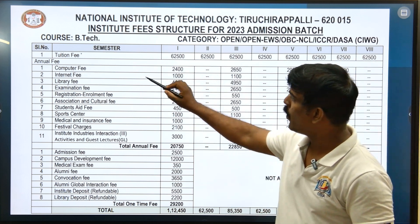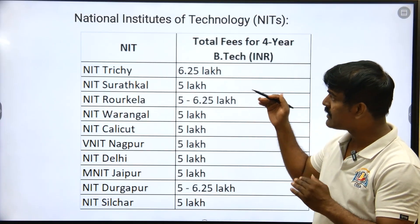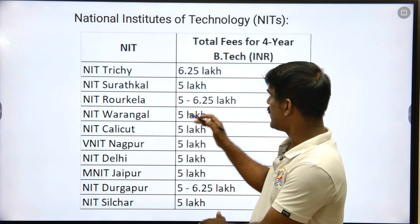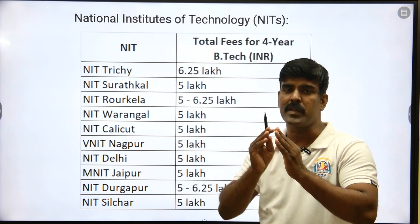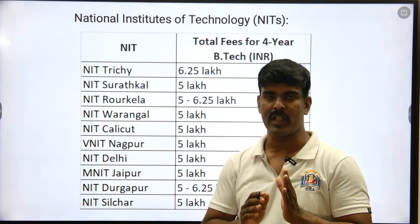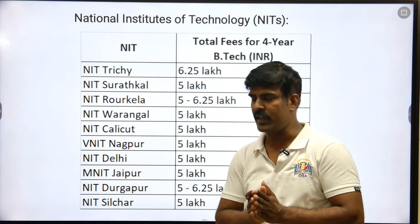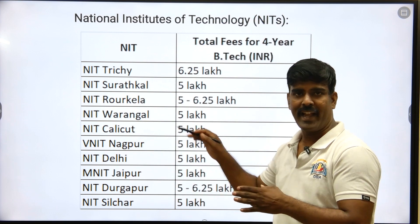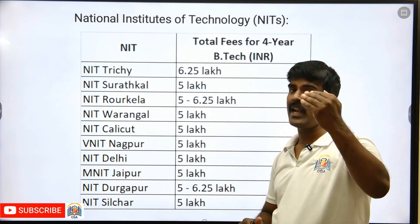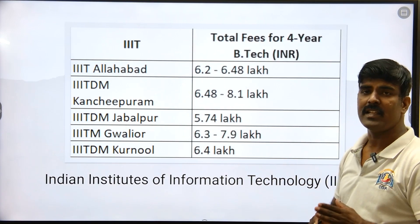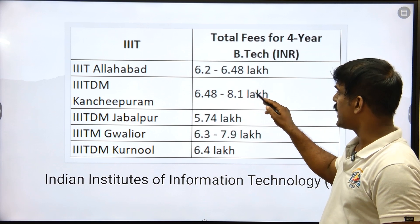This is the fee structure for NIT. The overall fee structure for NIT — every month they will be generating the mess bill. This is the respective fees for all 4 years. For the respective NITs, you have a minimum of 5 lakhs and 6.25 lakhs for NIT. For IIT, it is 10 lakhs. And then IIIT — Indian Institute of Information and Technology — especially for IIITs, it is 6.48 lakhs and 8.1 lakhs.